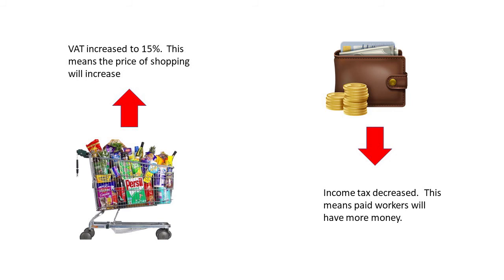So VAT increases to 15%, meaning the price of shopping is going to increase. But income tax is decreased, so if you're a worker, you're being paid more money. Margaret Thatcher is essentially saying you're going to be allowed to make a decision as to where you spend your money — the government's not going to make that decision for you. You can decide where you're spending your money; that's why we're giving your money back to you.